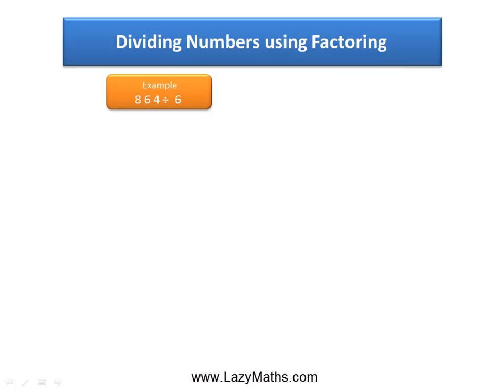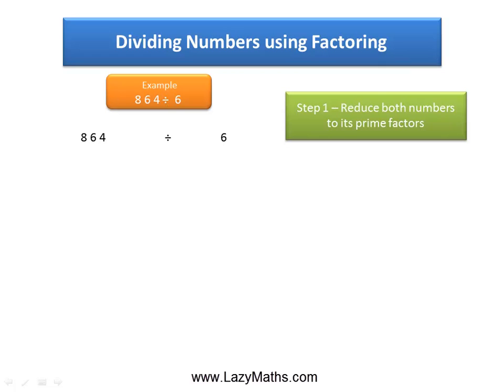Here's an example of dividing numbers using factoring: 864 divided by 6. The first step is to find the factors, or reduce these numbers 864 and 6, into their prime factors.